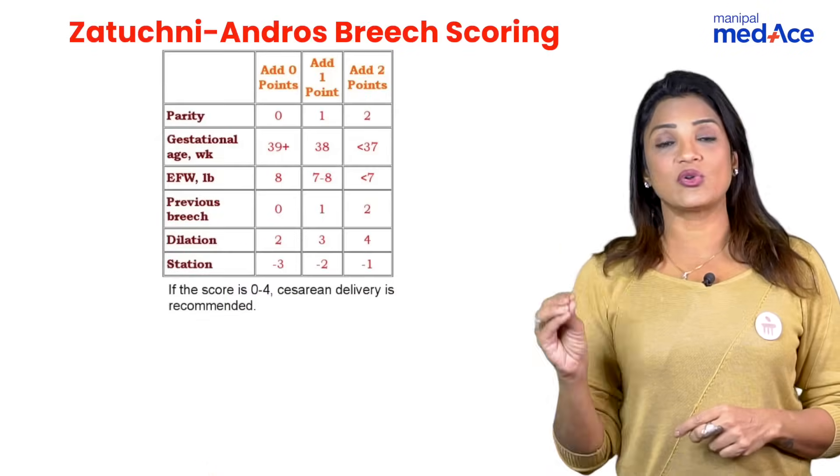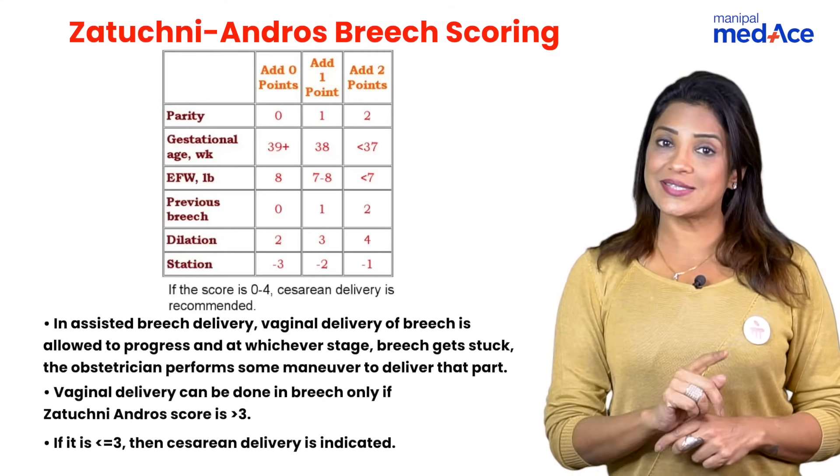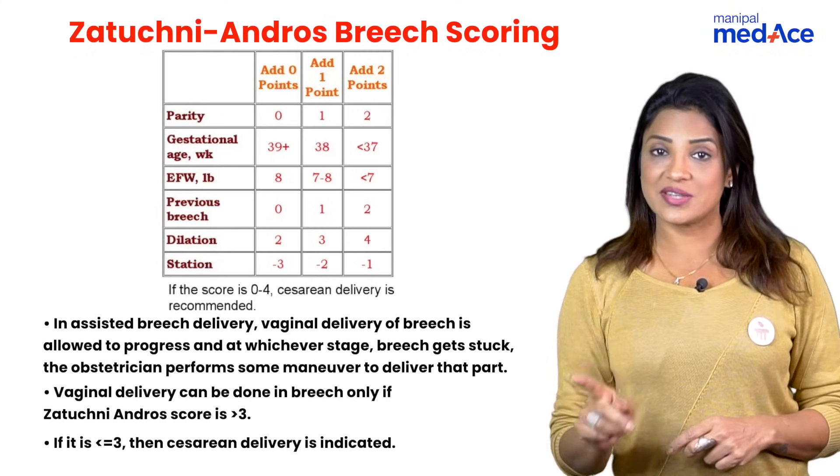You decide whether the patient can have a vaginal delivery or elective caesarean section based on the Zatuchni-Andros score, which you can see on the screen. If the score is less than 3, you go for a caesarean section.